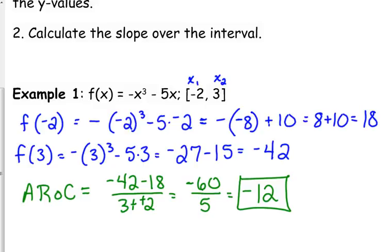Yes. Yes, that is the slope of the secant line between negative 2 and 3.